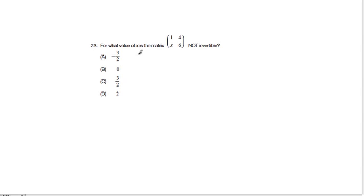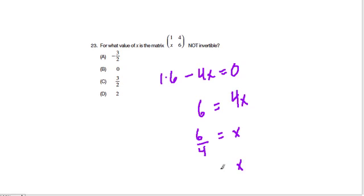And last, we have, for what value of x is the matrix 1, 4, x, 6 not invertible? So 1 times 6 minus 4x. When that equals 0, it's not invertible. So 4x equals 6, and x equals 6 over 4, which is 1.5.